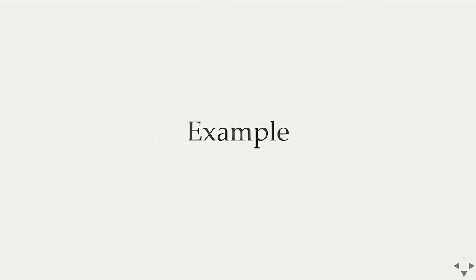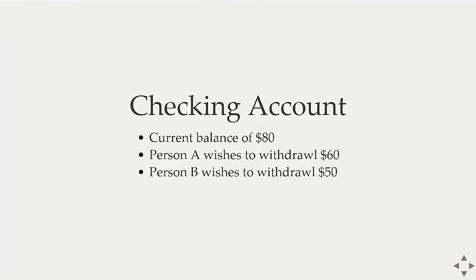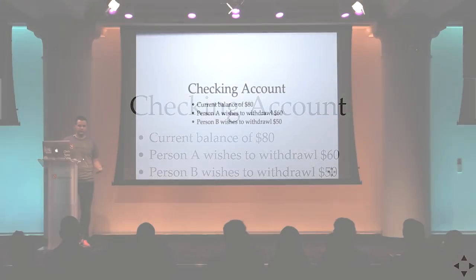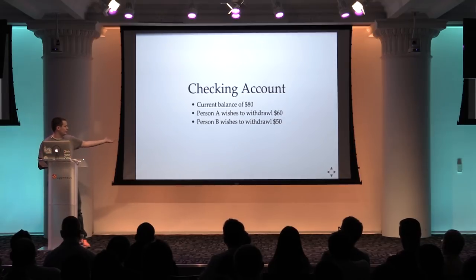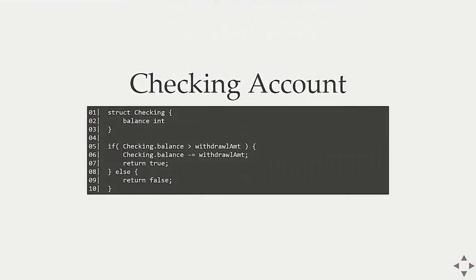Let's look at a classic example: a checking account. We're going to perform multiple simultaneous withdrawals and require some coordination to ensure we don't overdraw. We have a balance of $80, person A wants to withdraw $60, person B wants to withdraw $50 — one has to succeed and one has to fail. The naive approach is a simple if condition: if balance is greater than the withdrawal amount, decrement the balance and return true; otherwise return false.